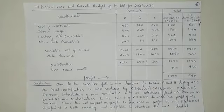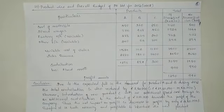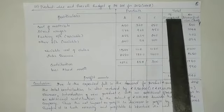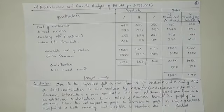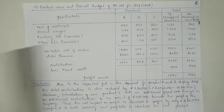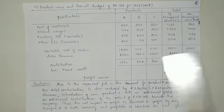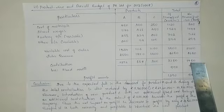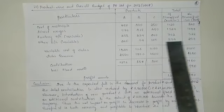We now prepare a product-wise and overall budget for the year 2012. For the 'if diversified' scenario, Product A, Product B, and Product C are all included. For the 'if not diversified' scenario, only Product A and Product B are continued with production and sales — no new product is introduced. We are going to compare and analyze both situations.